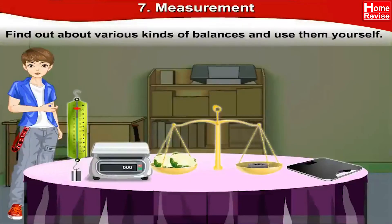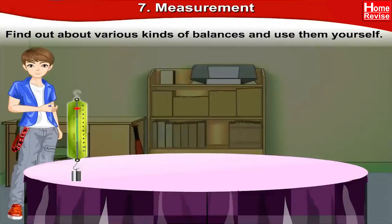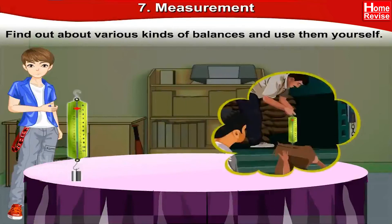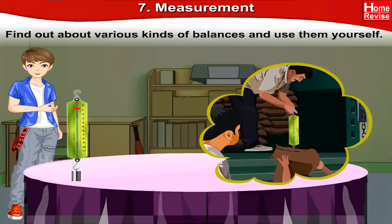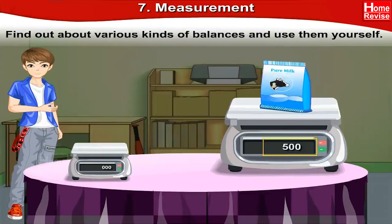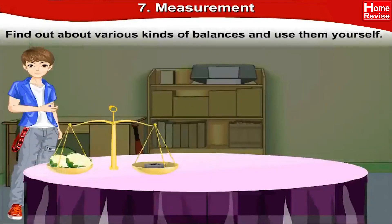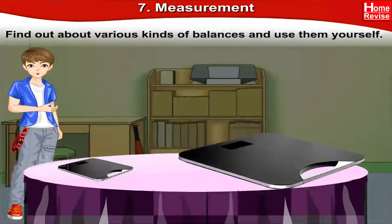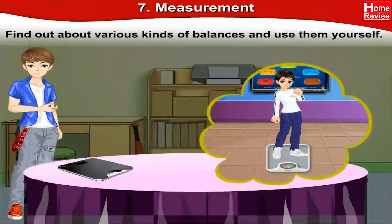Find out about various kinds of balances and use them yourself. First, the spring balance — it has a spring inside and is used to weigh a sack of food grains. Next, the electronic balance, which is a digital balance where the weight appears in written form as digital numbers. Then the common balance, which is found at fruit or vegetable sellers' shops. And lastly, scales for body weight — this is the kind of scale you use when weighing yourself.